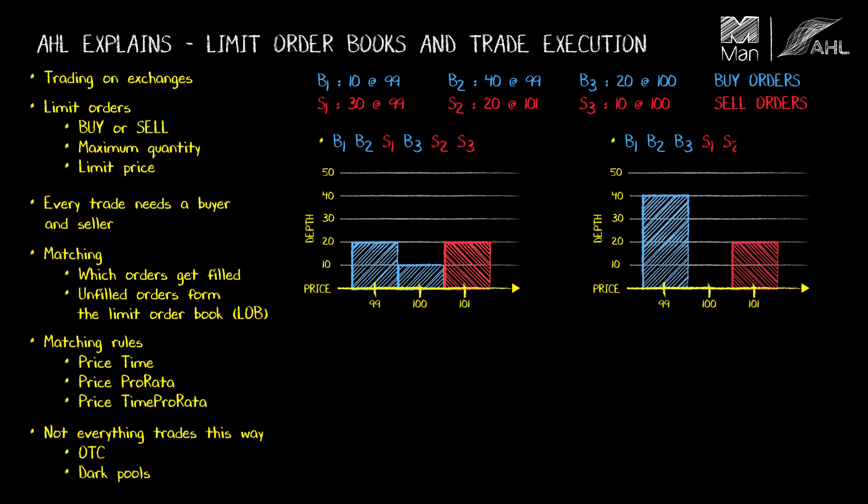Finally S2 and S3 arrive. The final limit order books are described as 100 to 101 in the first case and 99 to 100 in the second. What I'm doing is quoting the best bid and the best ask prices to describe their state. It should be clear from this that the order in which things happen is important for determining how the limit order book evolves.